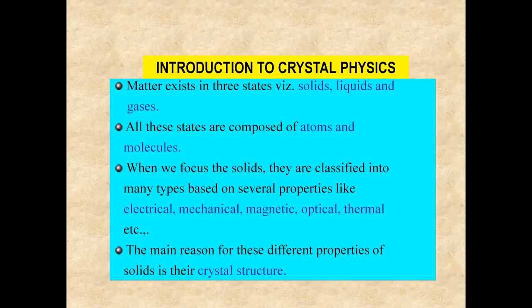Matter exists in three states: solids, liquids, and gases. In solids, different particles are arranged systematically in a periodic manner, having definite shape and size. In liquids there is no definite shape but there is some mobility — the molecules can move around. In gases, all the atoms or molecules are free and there is no definite size or shape.